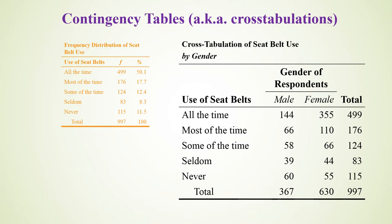So here we have one variable just like before, and you'll notice in the totals column we have the same numbers: 499, 176, 124. But now everything is broken down into subgroups — that's what we mean by representing two variables at once: taking the answers here and breaking them down by the answers here. We've created a 2D representation of two variables at once, two dimensions because there are two variables.